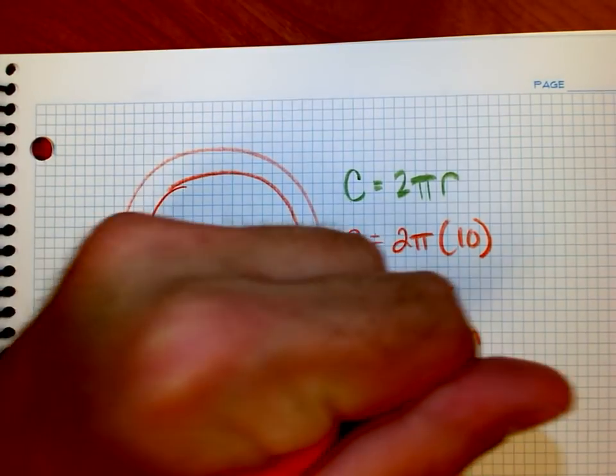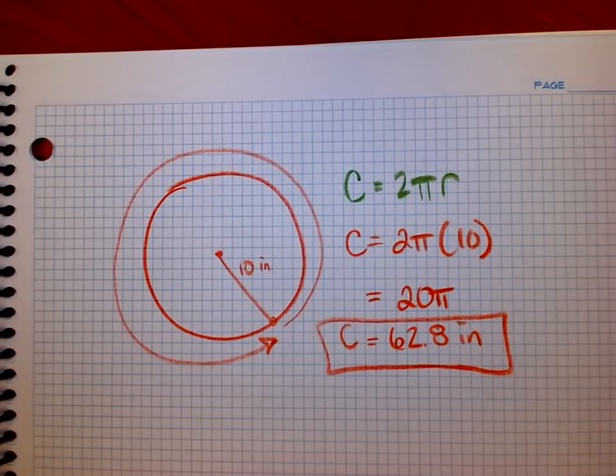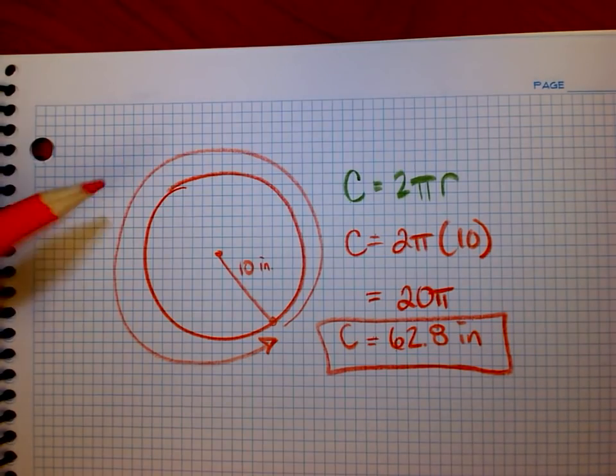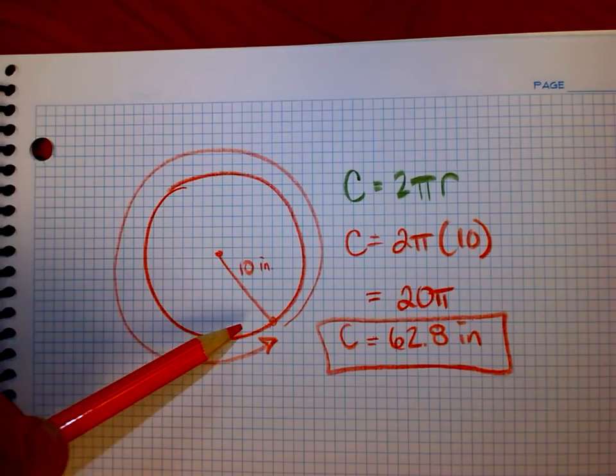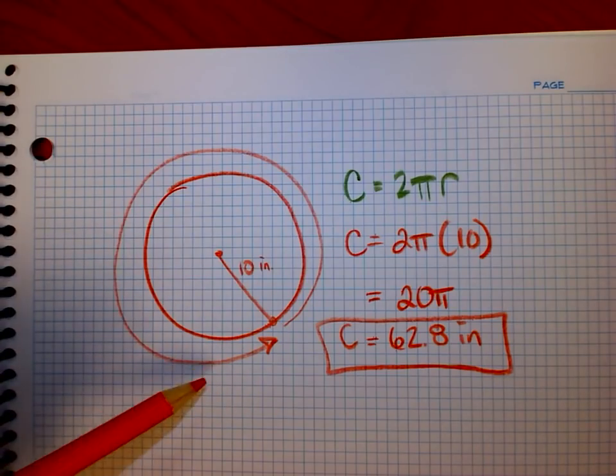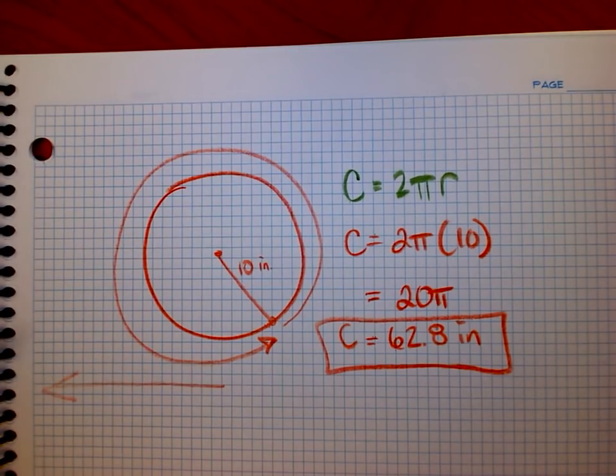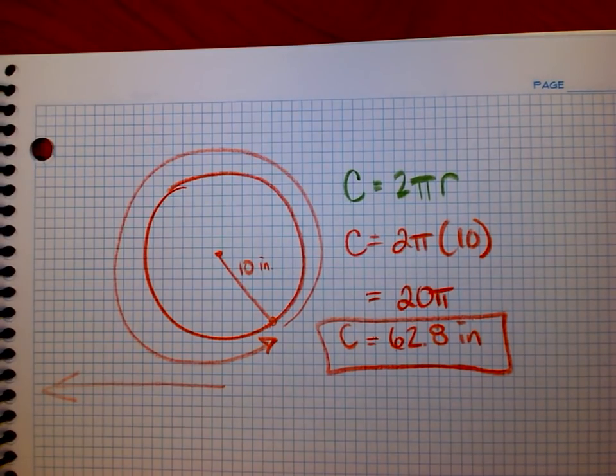So the circumference, the distance around that circle is 62.8 inches. I could also say, you know what, if I took this wheel, and I rolled it down a hill, or rolled it down the street, and it rotated one time, that it would have traveled in a straight direction. It would have traveled 62.8 inches for each turn. So hopefully that makes sense.